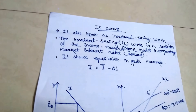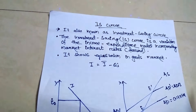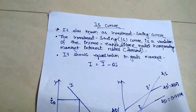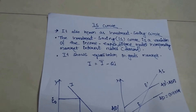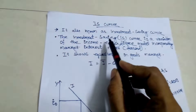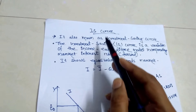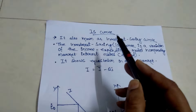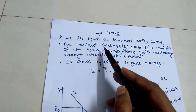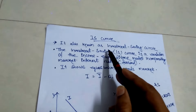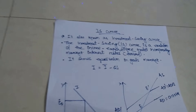Hi friend, in macroeconomics the IS-LM curve is a very important chapter. First we have to read about the IS curve, then we have to discuss the LM curve. In maximum UG and Senate economics in paper 2 and paper 3, you must get one question from IS-LM curve, so we have to discuss the important questions.